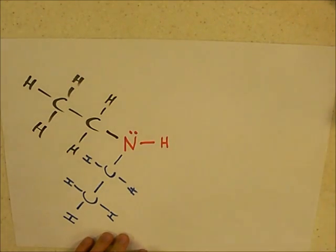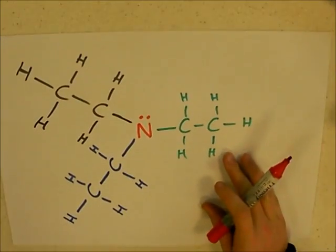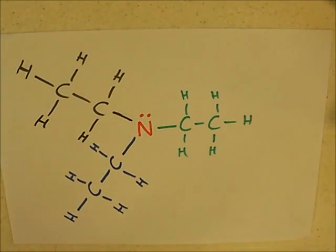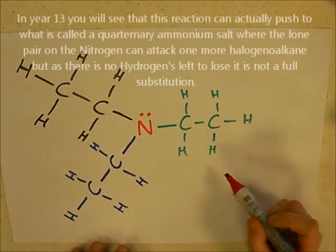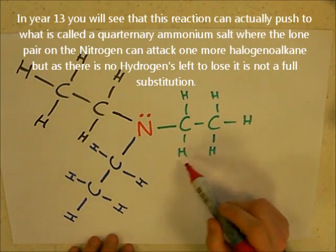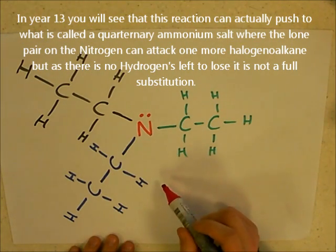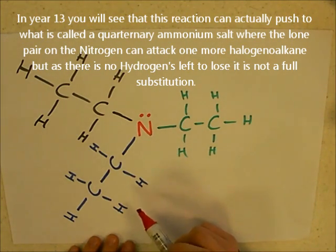This can act, again, on another halogen alkane, and can result in a tertiary amine, which will look something like this. Now, this reaction can go no further, because we haven't got any extra hydrogens on this nitrogen to swap or substitute for these alkyl groups. So there's a tertiary amine, and this one would be triethyl amine.